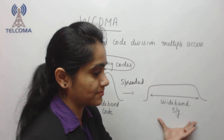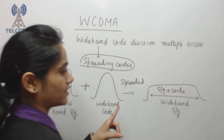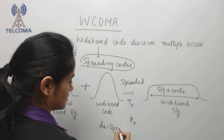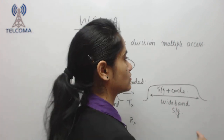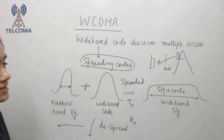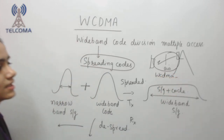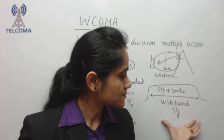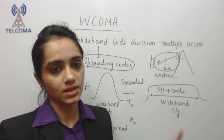I have spread my signal and made it a wideband signal. This signal will contain my original signal combined with the code. At the transmitter side I spread the signal, and at the receiver side I need to despread the signal so I can remove the code and recover the original signal. The signal travels through the air interface, and this is the core concept of WCDMA.